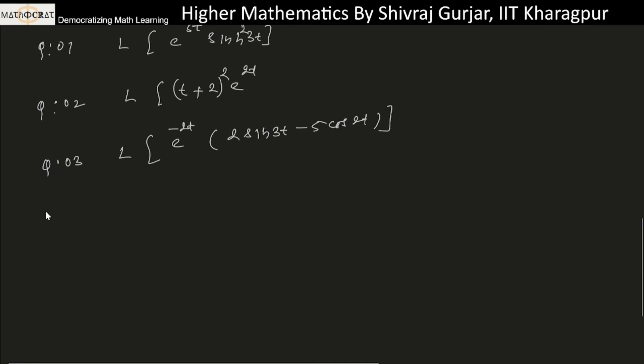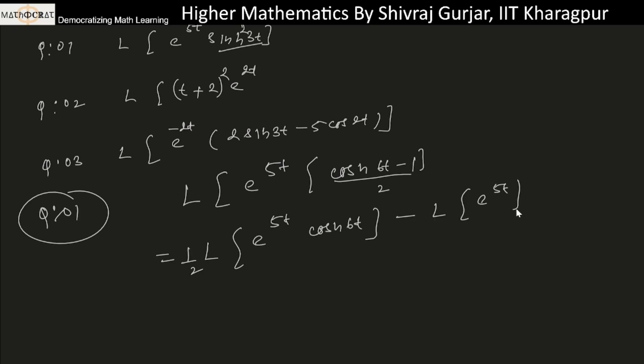First question: Laplace of e to the power 5t times sinh squared 3t. This can be written as cosh 6t minus 1 divided by 2. We can write Laplace of e to the power 5t times cosh 6t times half minus Laplace of e to the power 5t times half. By the linear property of Laplace transformation, this can be done.